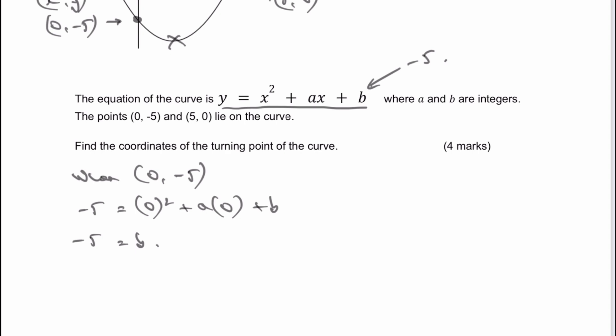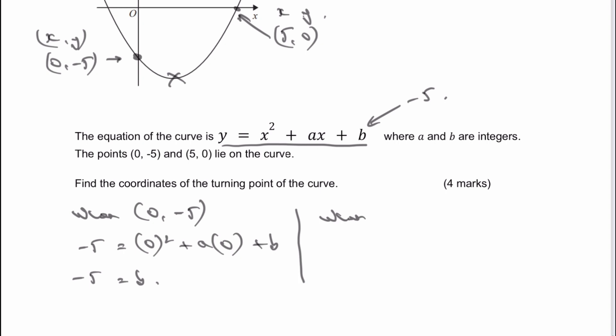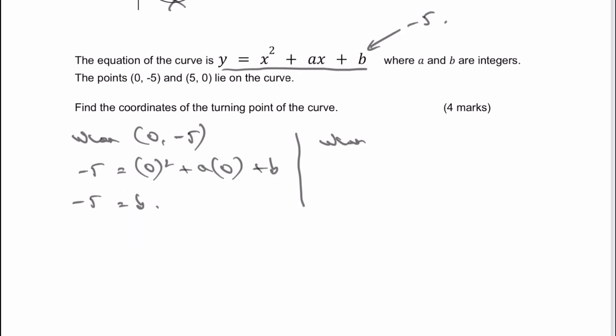We can then also look at when we have the other coordinate that we talked about, which is going to be this one at the top here, which is (5, 0). So when x equals 5 and y equals 0, I'm going to get 0 equals 5 squared, which is the value of x, plus a times 5 minus 5, which is the value of b.